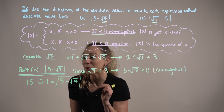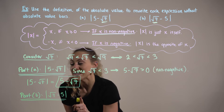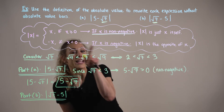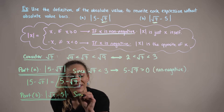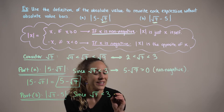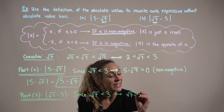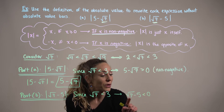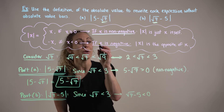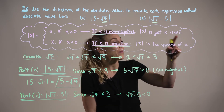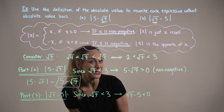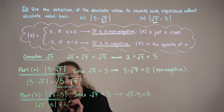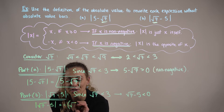Now in part B, we want to evaluate the absolute value of the square root of 7 minus 5. Thinking back to our original inequality, since the square root of 7 is less than 3, then the square root of 7 minus 5 — or approximately 3 minus 5 — is negative; it's going to be less than 0. So we are working with case 2, and we want the opposite value of the inside of the absolute value expression: the absolute value of the square root of 7 minus 5 is the opposite of that number, so minus the quantity square root of 7 minus 5.